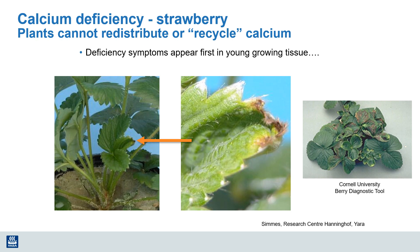Strawberry is another crop where getting enough calcium is a concern. We see evidence of calcium deficiency on leaf growth, with those leaf margins starting to die. But even more importantly, an adequate supply of calcium is essential for good strawberry fruit — to make cell walls firm and membranes secure. This allows strawberries to stay fresh for a longer period of time, and they can be transported for many days before they start to break down.